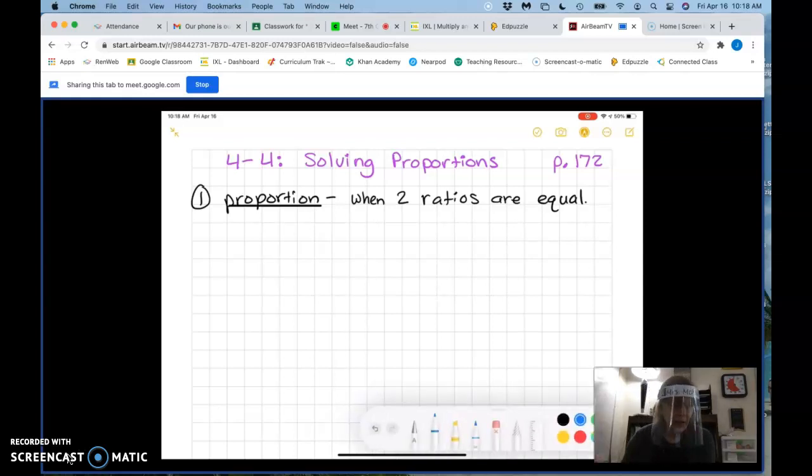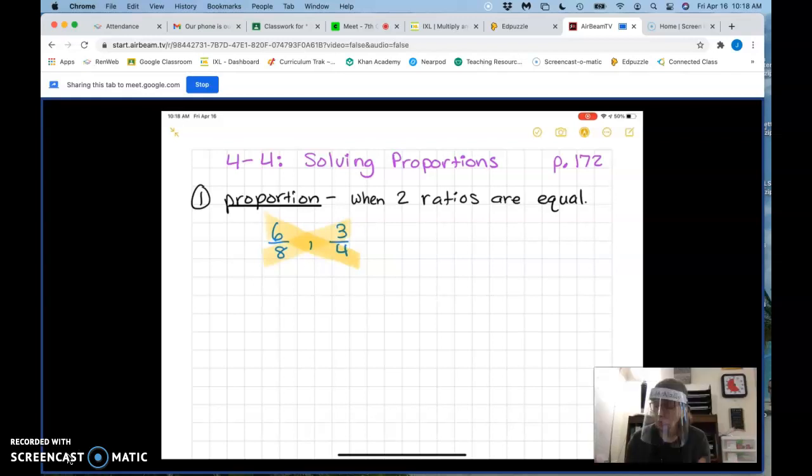So what if I had 6 to 8 and 3 to 4 and they asked me are these two ratios equal? Well the way that I can find out is by cross multiplying and I showed you guys this a little bit yesterday I think. Okay so you're gonna draw this X on these two fractions right now. Okay remember whatever I do you do and I definitely want you drawing this X every time because it helps remind you what you're actually multiplying.